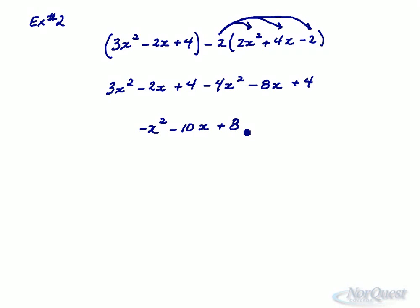Next example is just going to bring a second variable into it. So example number 3. We'll look at 4x²y + 3x - 6y². And to it, we're going to subtract 2x²y - 4x - 6y².